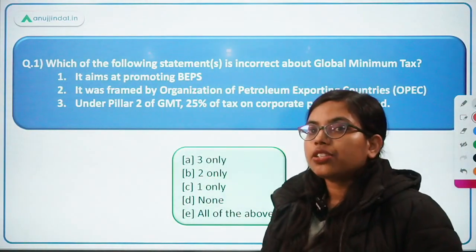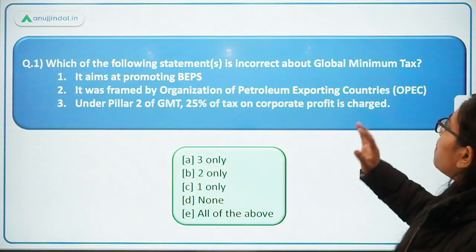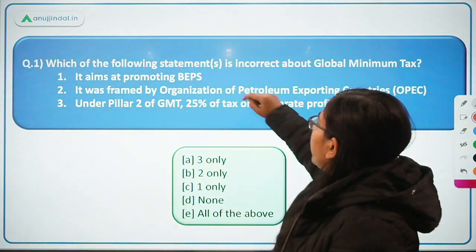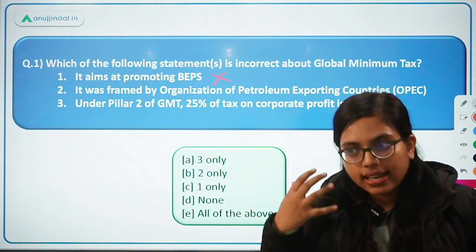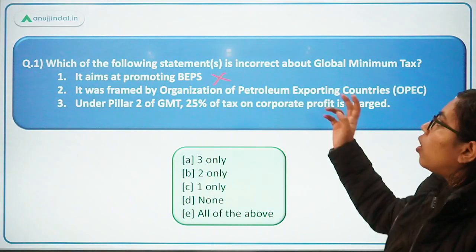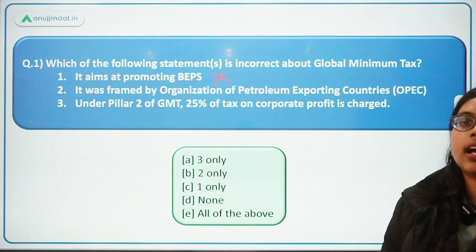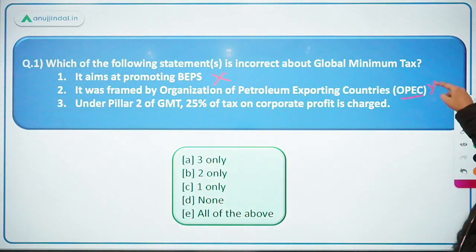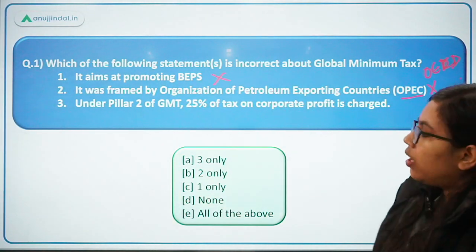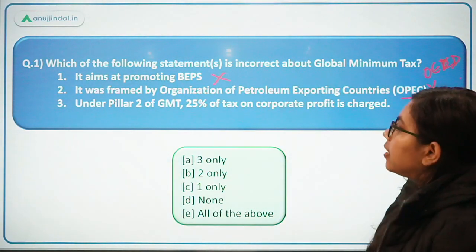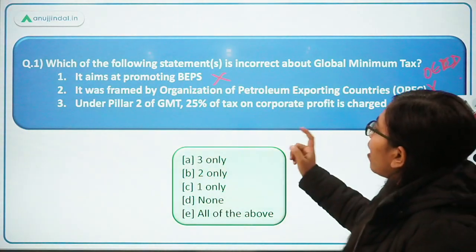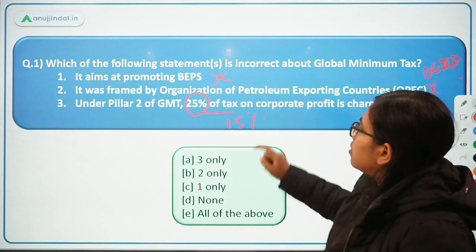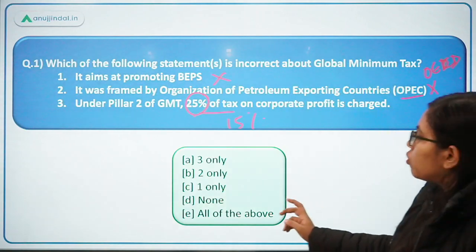Now let's move forward to the questions. The first question states: which of the following statements is incorrect about the global minimum tax? Statement one says it aims at promoting base erosion and profit shifting — this is totally opposite to the objective, as the GMT aims to reduce profit shifting. Statement two says it was framed by OPEC — wrong, it is OECD. Statement three says under Pillar Two, 25% of tax on corporate profits is charged — wrong, 25% is under Pillar One; under Pillar Two it is 15%. So all three are incorrect, making option E — all of the above — the correct answer.